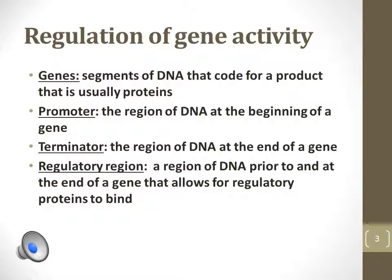Genes are sections of DNA that code for a protein product. Rarely, genes code for functional mRNA products. The promoter is a section of DNA upstream of a gene that assists in the initiation of mRNA transcription of a gene. If methyl groups are placed on this sequence, the less that gene will be expressed.